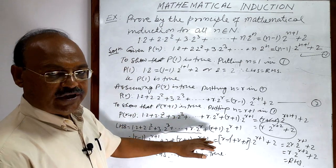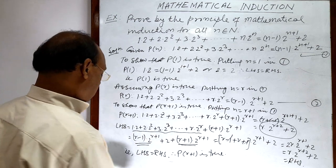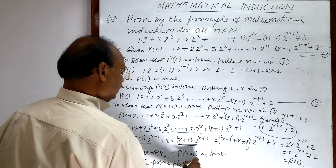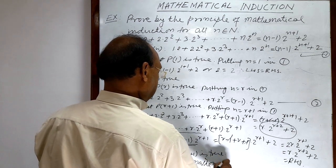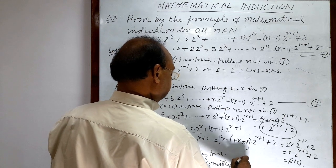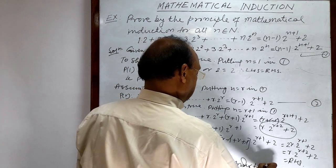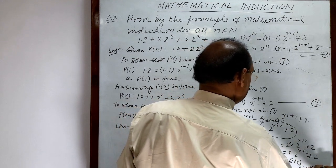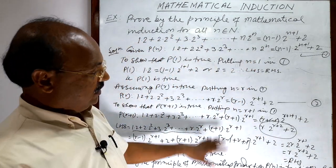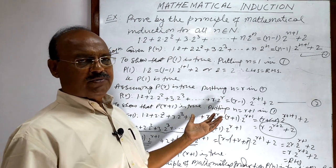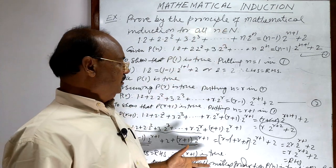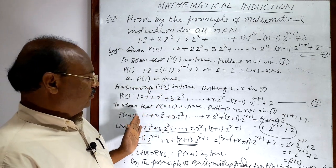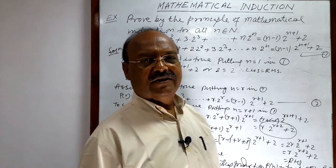Therefore, by the principle of mathematical induction, P(n) is true for all n — proved. To summarize: we took three steps. First step: showed P(1) is true. Second step: assumed P(r) is true. Third step: showed P(r+1) is true. Thank you very much, wish you all the best.